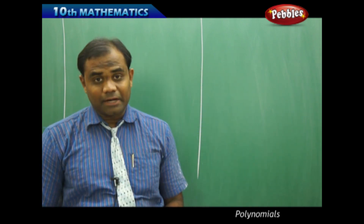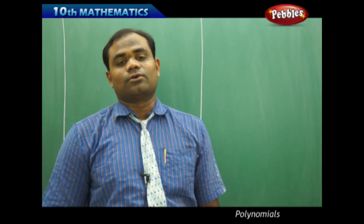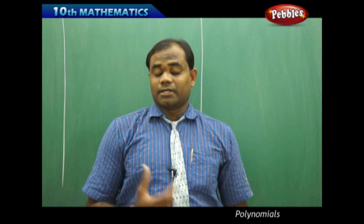Now that we have seen the graphs and the zeros of polynomials connected to the graphs, and identifying the degree of the polynomial connected with zeros, we'll see the relationship between zeros and the coefficients of polynomials. Let's see if there is any relation between the zeros of the polynomial and the respective coefficients of that polynomial.